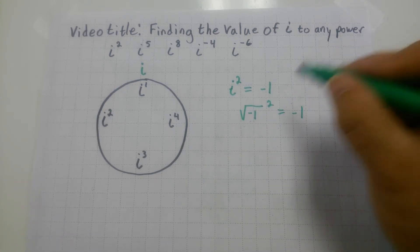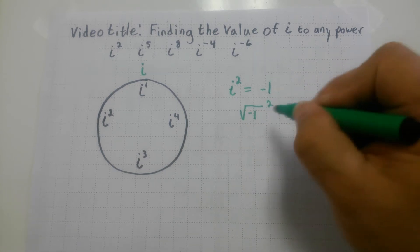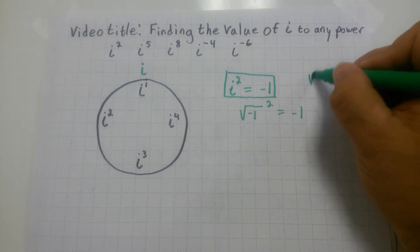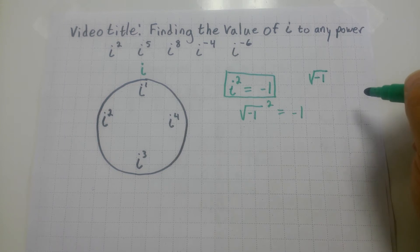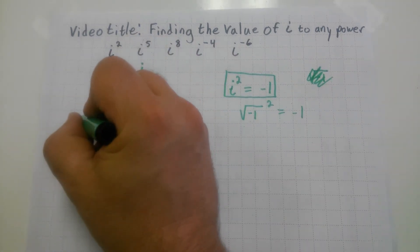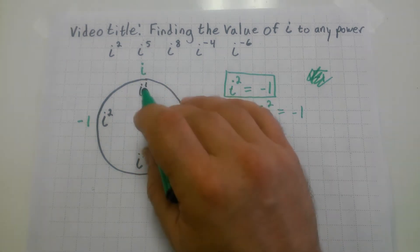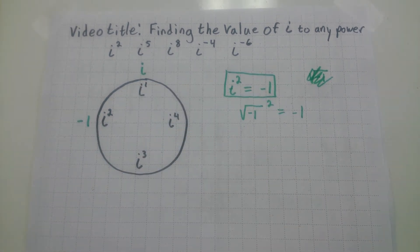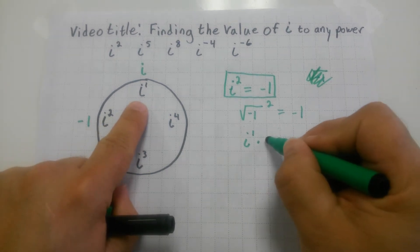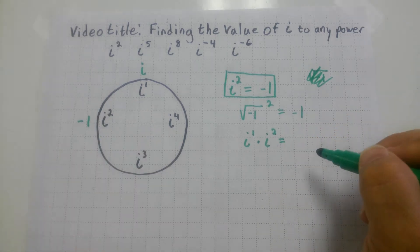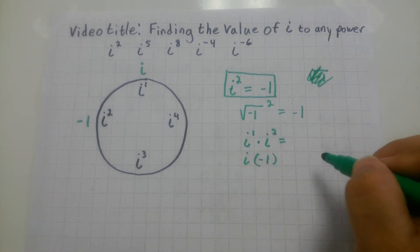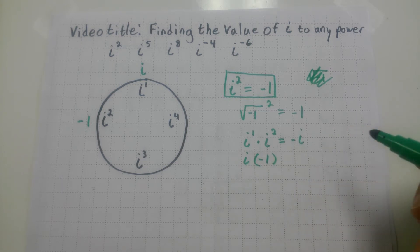Here's the deal. i to the first — not much happens, that's going to be i. And i squared equals negative one. You can look at it as the square root of negative one, squared, which equals negative one because the square eliminates the radical. But I prefer i squared equals negative one as my definition of i, rather than the textbook version. We can all agree that i squared equals negative one. So i to the first is i, i squared is negative one.